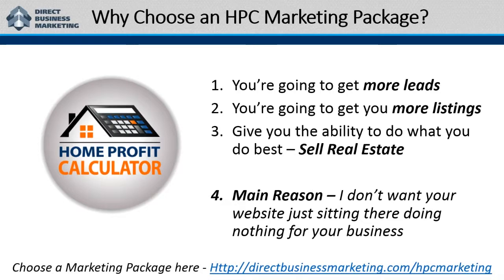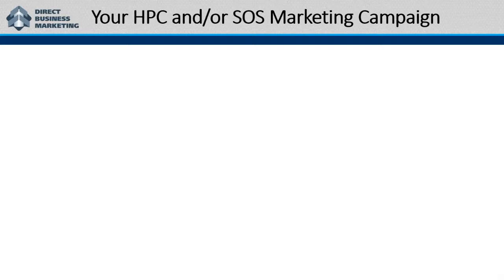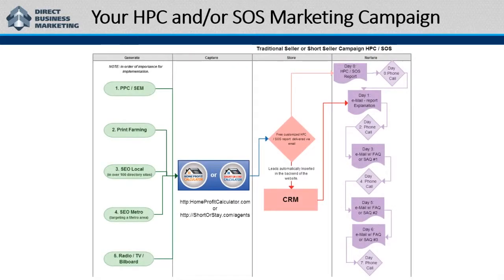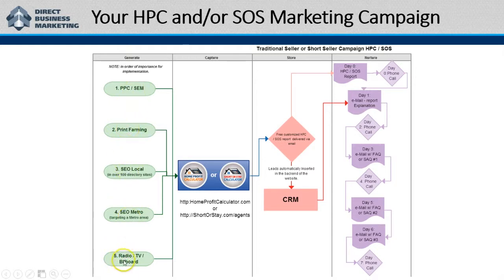Here's the link again: directbusinessmarketing.com/HPC-marketing. When you're said and done, your marketing campaign should look like this. This is our traditional seller and/or short seller HPC or SOS lead generation campaign. In order of importance for implementation — these green ovals — you want to implement them in sequential order: one, two, three, four, five: PPC, print marketing, SEO, SEO local, radio, TV. Obviously, if you have the budget to go directly to radio or TV, just skip to that one and work with us.